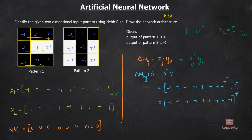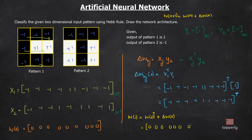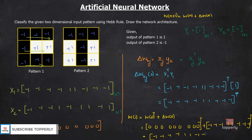The weight update rule is w equals w plus delta w. To find the updated weight w, we add w0 (which is a zero matrix) plus delta w at iteration 0, giving: minus 1, minus 1, minus 1, minus 1, minus 1, 1, 1, minus 1, minus 1, minus 1 (transposed).